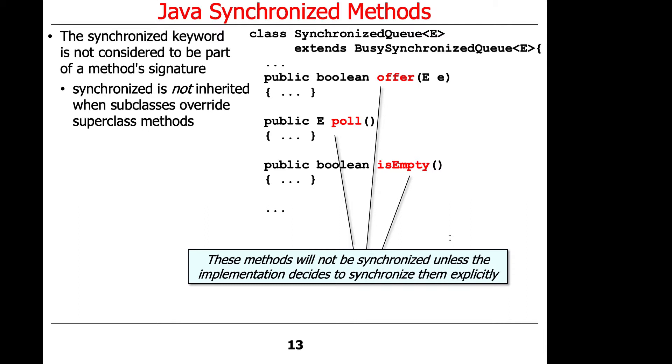And in particular, if you subclass from busy synchronized queue to make something called synchronized queue, the synchronization is not inherited by default. You would have to come in and make these methods synchronized as well.